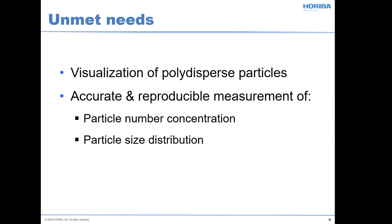Dynamic light scattering is also a very fast, repeatable technique. Electron microscopy, as the name says, uses an electron microscope. It's great for actually getting at the shape of particles because you collect images using electrons rather than light. The advantage is the shape information and lots of detail. The disadvantage is that you don't see very many particles, and sample prep can be a real headache. So what's unmet is visualization on any kind of scale of what's happening in these systems, as well as accurate or reproducible measurement of number concentration and size distribution details.